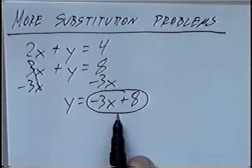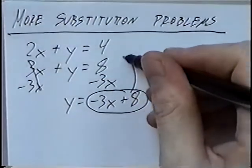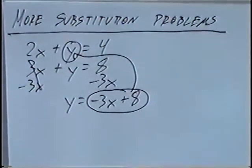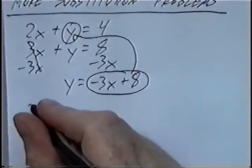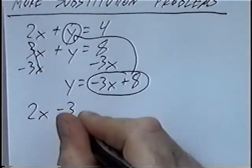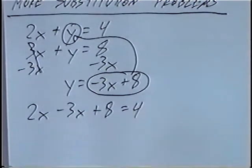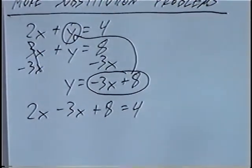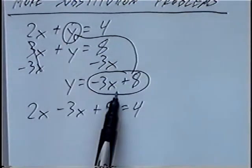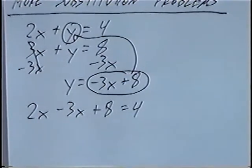Once you have a variable isolated — y equals negative 3x plus 8 — we can take this expression and plug it into the other equation that we have not used, substituting for that variable. Make sure when you substitute that you substitute into the other equation, and never plug it back into the original equation that you used for substitution.